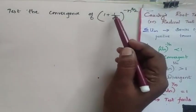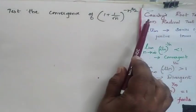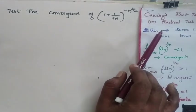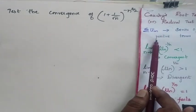Test the convergence of this. Now we are going to test the convergence by Cauchy root test or radical test, where you have your u_n as a series of positive terms.